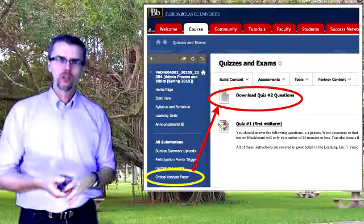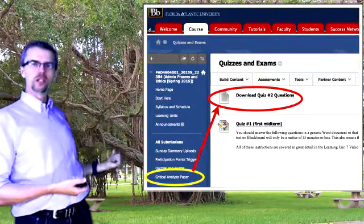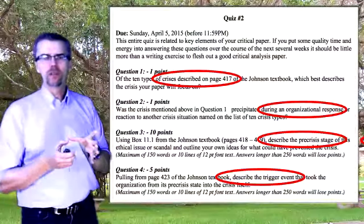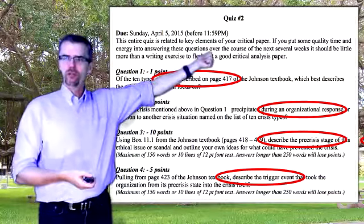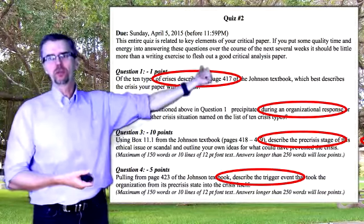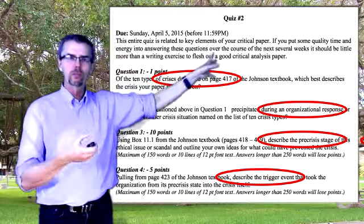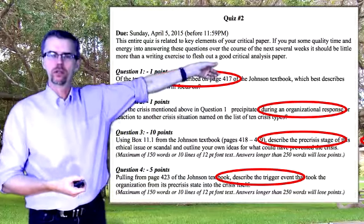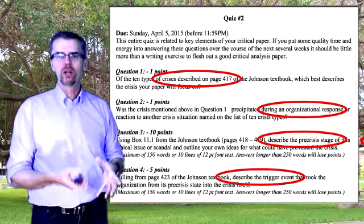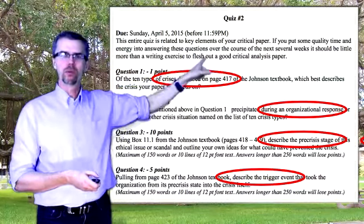All of the questions for quiz number two are now up on Blackboard — you get there by clicking on Critical Analysis Paper and downloading quiz number two questions. The quiz starts off by telling you it's due April 5th before 11:59 PM. Question number one talks about the ten types of crises described on page 417. In keeping with my testing style, I tell you where to go to answer the question — I'm looking for something very specific, and you'll find it on page 417. That's worth one point.